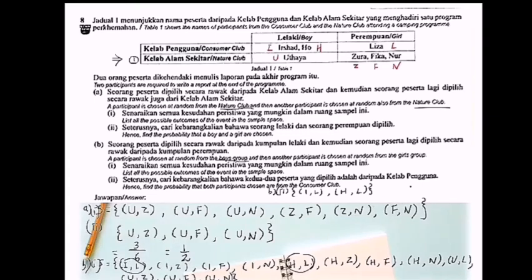So what is the probability? Probability is 2 only out of the total sample space. Just now: 1, 2, 3, 4, 5, 6, 7, 8, 9, 10, 11, 12. So equal to 1 over 6.